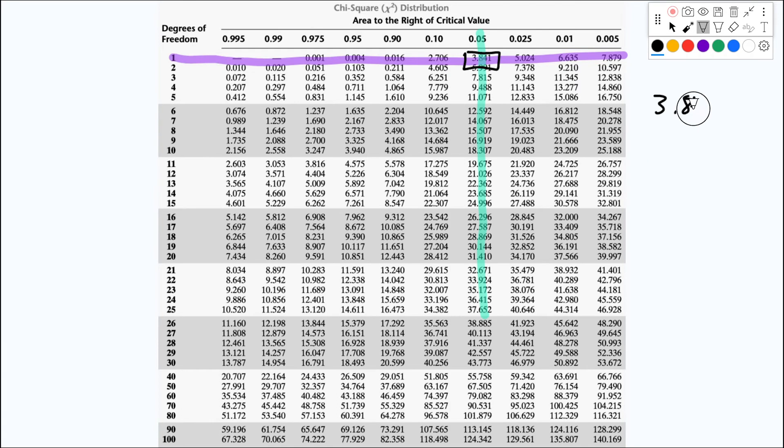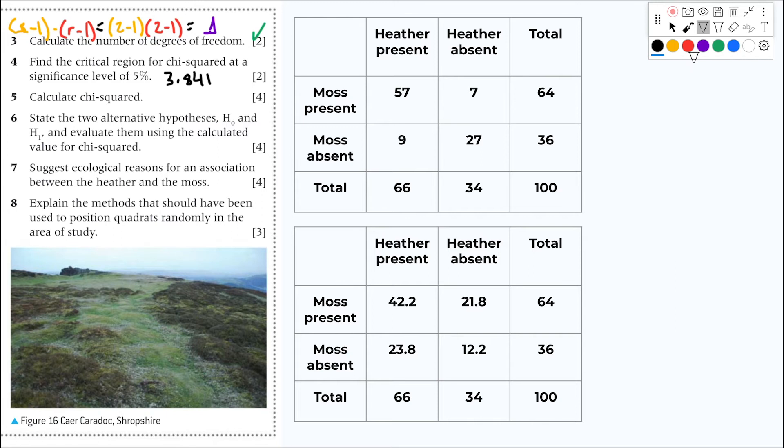It's 3.841. So we don't forget. Bam! Two more marks. Now you calculate the chi-square. Calculating the chi-square, probably the easiest part because chi-square will be the sum of my observed value.